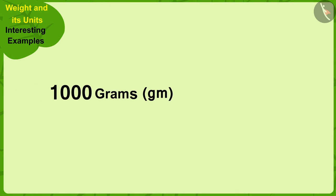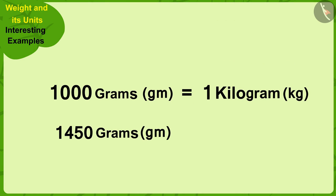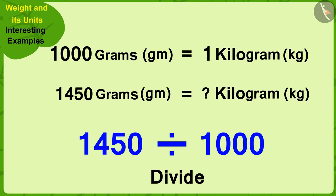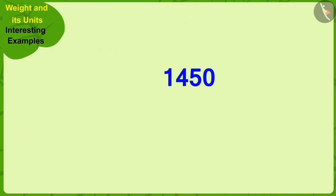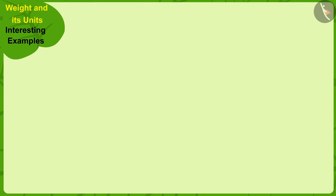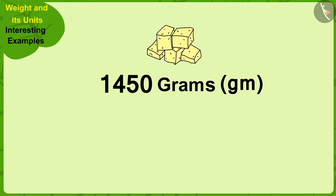1000 grams is equal to 1 kilogram. So, to find out how many kilograms is equal to 1450 grams, we only have to divide 1450 by 1000. We can divide 1450 by 1000 in this way. Now, it is very easy. Whatever number is written here on top is in kilogram and the remaining numbers are the remaining grams. This means 1450 grams is 1 kilogram and 450 grams.